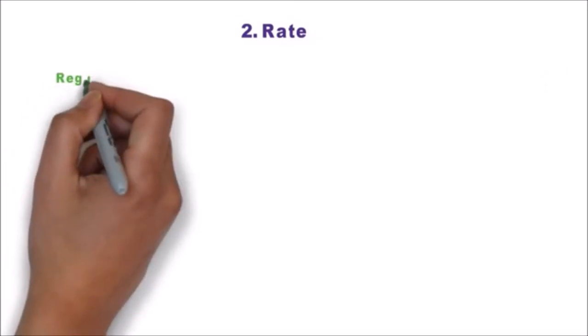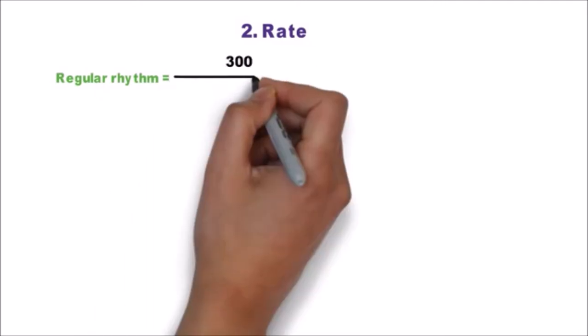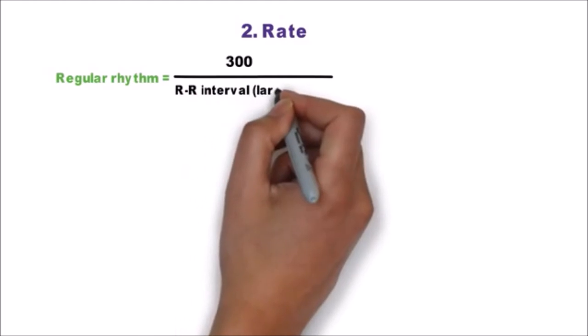Step 2. It is to calculate heart rate from an ECG. If the rhythm is regular in ECG, heart rate is calculated by 300 divided by large boxes between RR interval.